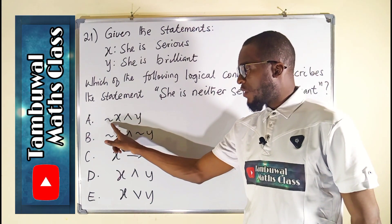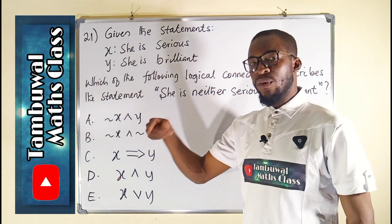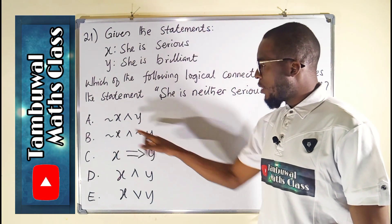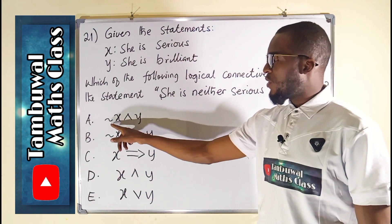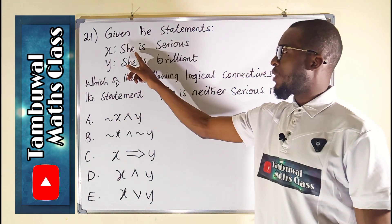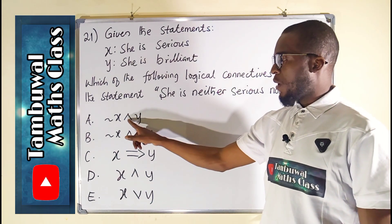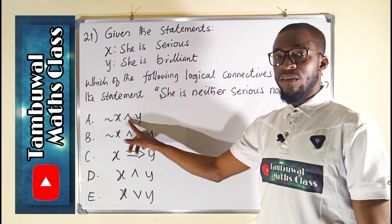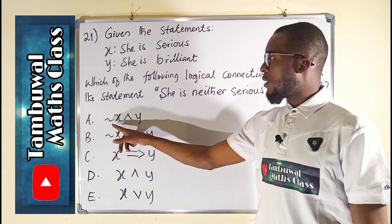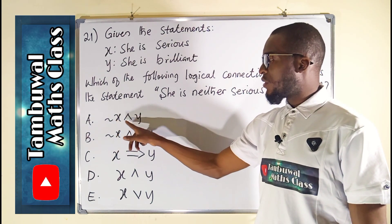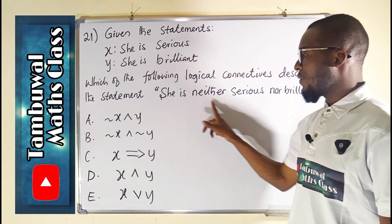This sign here stands for negation. Negation means the opposite of that statement. X stands for 'she is serious,' therefore the negation of X stands for 'she is not serious.' This is an AND statement, so we read it as: 'she is not serious and she is brilliant' — and this doesn't describe what we are looking for.